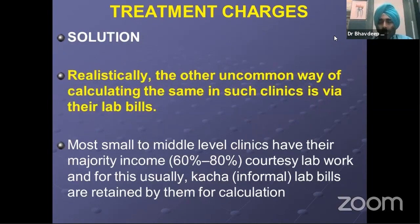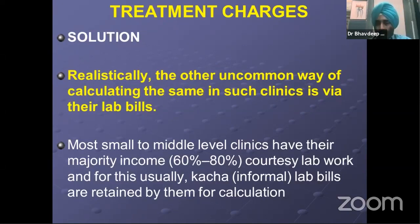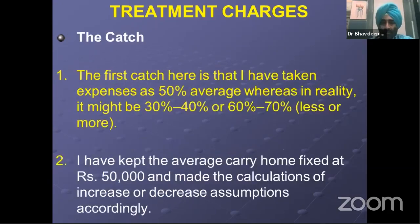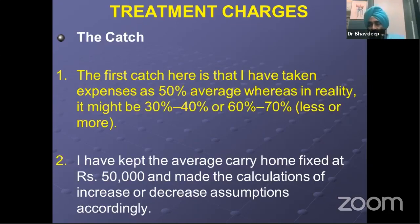Even those who are indulging are totally software-dependent and do not have actual segregation or division of the numbers. This becomes absolutely mandatory in today's times. One ray of hope: small clinics — most of them have a good chunk of revenue, 60 to 80%, coming from their lab bills. So they know where the contributory factor is. They usually have their kaccha lab bills — they want to save the GST on that — but at least they have the lab bills which can be used for calculation.